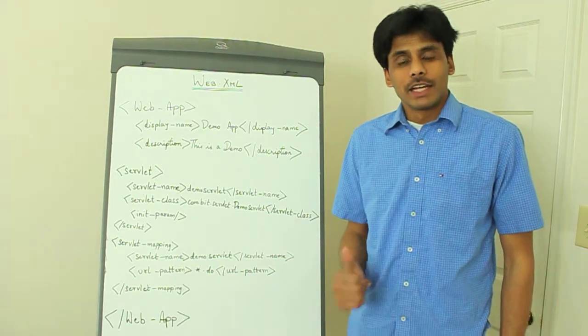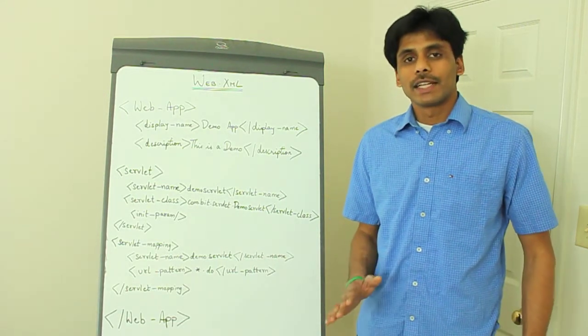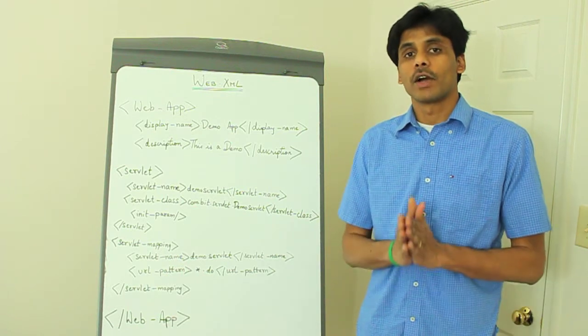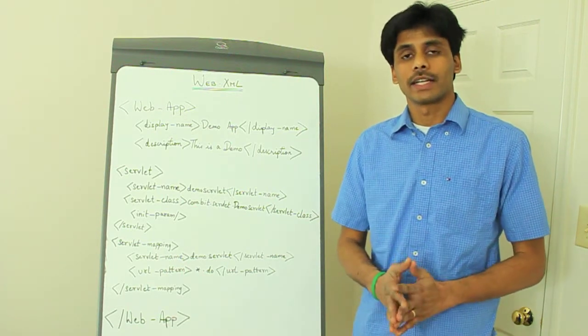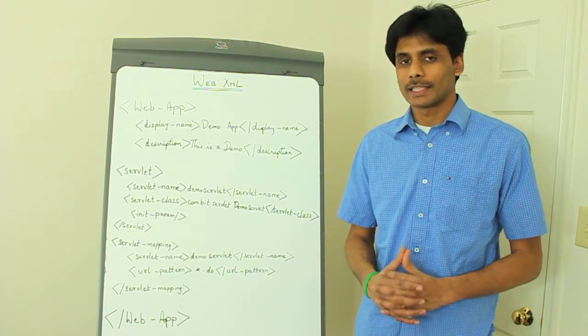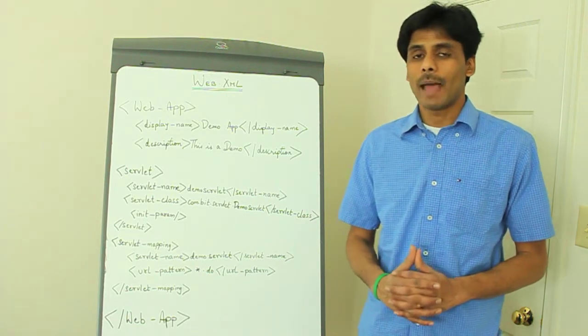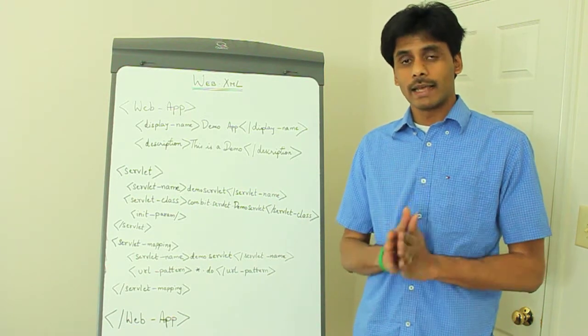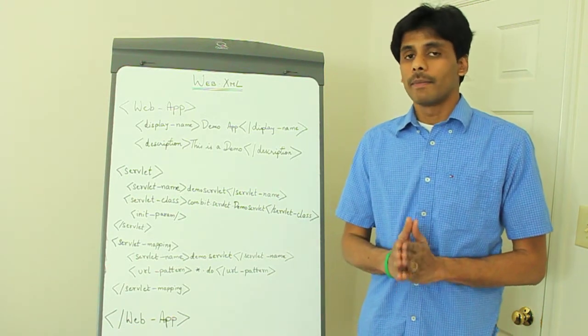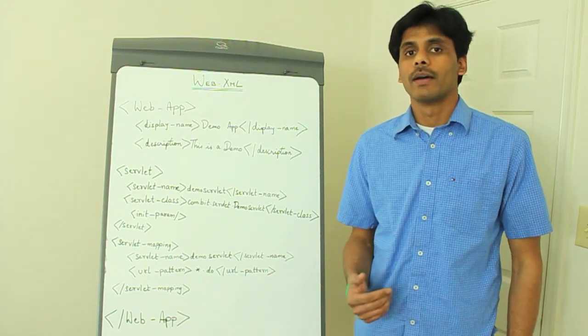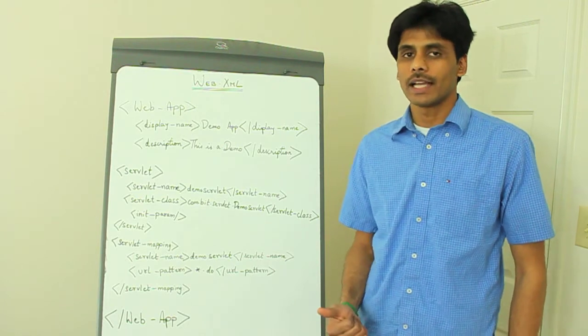But since we are dealing with servlets right now, I'll be presenting the servlet related elements within the web.xml file and I'll be presenting all the other elements wherever relevant in the future presentations. So let's look at our first web.xml file and the servlet mapping elements which will allow us to give a name to our servlet, do a URL mapping for our servlet class, and also pass in the initialization parameters for our servlet class.